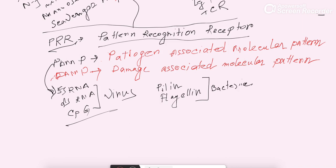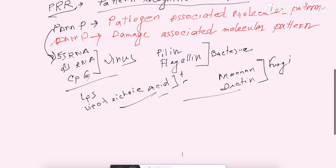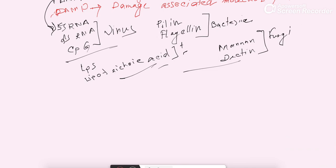Cell wall components like LPS (lipopolysaccharides) and lipoteichoic acid, found from gram-positive and gram-negative bacteria, are also PAMPs — they are not substances of the human body. Carbohydrates like mannan and Dectin are found from fungi, and these are all examples of PAMPs. So these are the examples of PAMP from viruses, bacteria, and fungi.